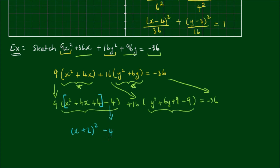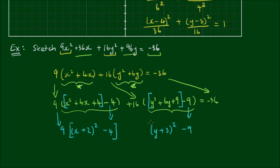Now x squared plus 4x plus 4 can be written as x plus 2 all squared. The minus 4 and coefficient 9 remain. Similarly, y squared plus 6y plus 9 can be written as y plus 3 all squared. The trailing minus 9 and coefficient 16 are carried, as is the negative 36 on the right-hand side.